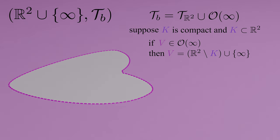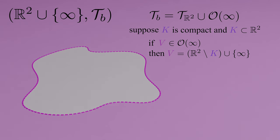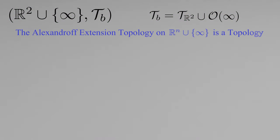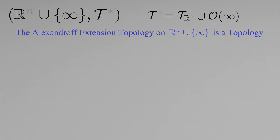An element V of O is defined as the complement of K in R2 unified with singleton point at infinity. As K varies through all these compact subsets, we obtain all of the open neighborhoods of the point at infinity. Thus, to form tau B for this video, we can refer to fancy O as the set of all possible subsets V of our extended plane such that V equals the complement of a compact subset of R2 unified with singleton point at infinity. This topology tau B comes from what is called the Alexandrov extension, and the Alexandrov extension topology on our plane is a topology, thus our extended plane is a topological space. For other reasons, this Alexandrov extension is also a one-point compactification. I'll rearrange our topological space to extended Rn tau star, because this concept generalizes to n dimensions.